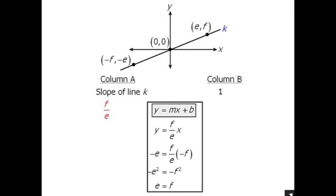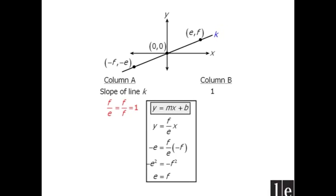Now if e equals f, we can go to column A here and replace e with f. From here we see that f over f must equal 1, in which case column A is equal to column B, which means our answer is C.